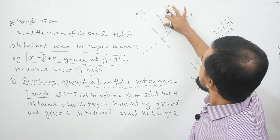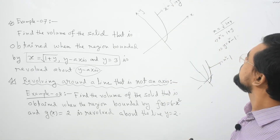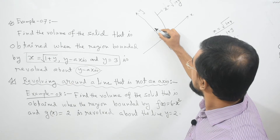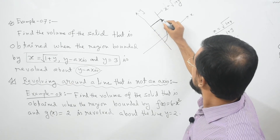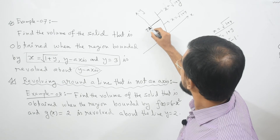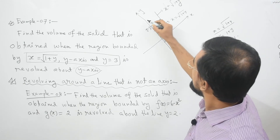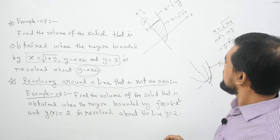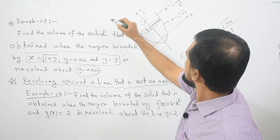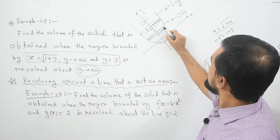So this is our curve x equal to root(1 plus y), and another boundary is the y-axis and y equal to 3. So the three boundaries are: x equal to root(1 plus y), y equal to 3, and the y-axis. If you revolve this region about the y-axis, you will get a solid material, and taking a cross section perpendicular to the y-axis gives us our formula.